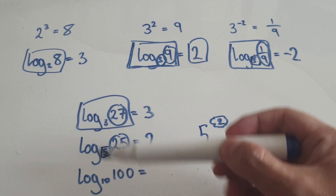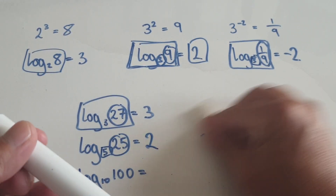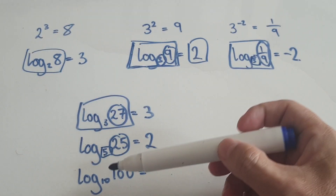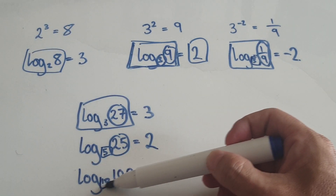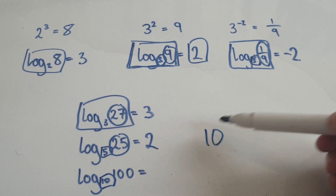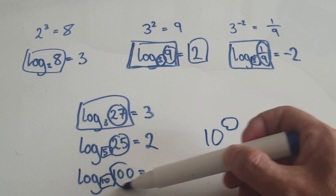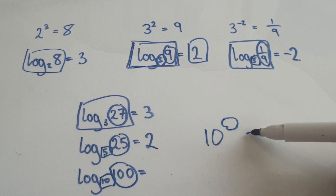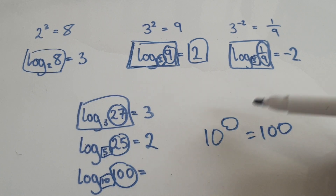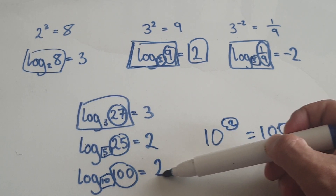Let's look at this here. You're right to zoom into the base and translate it. So 10 to the power of what would give me this thing here? It turns out to be the number 2, so this is 2.